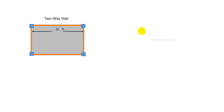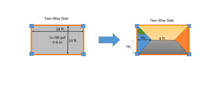For a two-way slab numerical example, suppose the longer direction is 18 feet and the shorter direction is 14 feet. The live load is 50 PSF and the slab thickness is 6 inches. Looking at the figure, when we draw the 45-degree angle lines, the base of the slab is 14 feet.